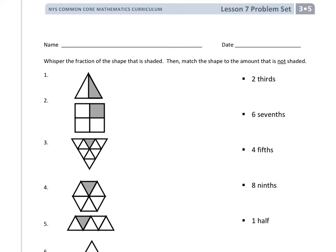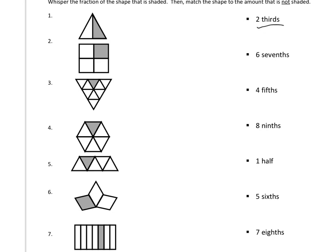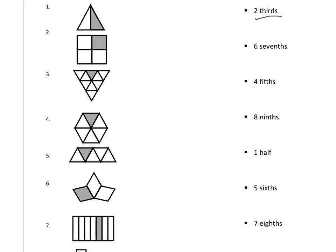So right here, where it says two-thirds, you are not looking for something that is two-thirds shaded. You are looking for something that is two-thirds not shaded. And that is something we need to find down here. If we count the pieces — look at this one, this one has three pieces. One-third is shaded and two-thirds is not shaded, so this would make sense.